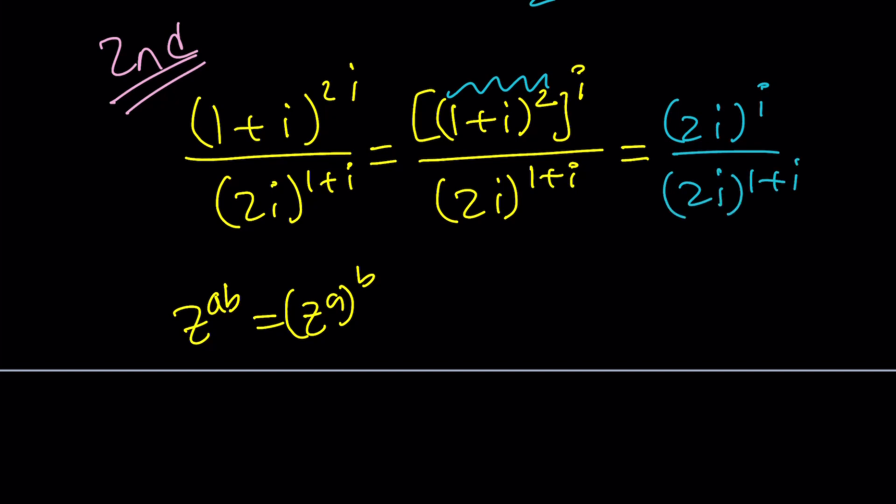1 plus i is 2i when you square it, so it's going to be 2i to the i, and this is 2i to the 1 plus i. And this is beautiful. You know why? Because we have the same base. I mean, it's amazing, isn't it? You subtract the exponents with i minus 1 minus i. i cancels out. You end up with negative 1. Beautiful.